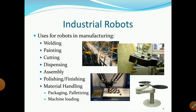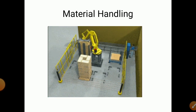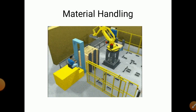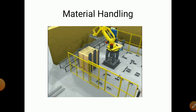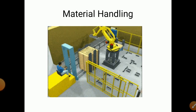Industrial robots are used in manufacturing. Robots have different arms, a controller, sensors, and actuators. They are used for welding, painting, cutting, dispensing, assembly, polishing, finishing, material handling, packaging, palletizing, and machine loading. With the help of robots, material is picked from one position and shifted to another, requiring sensors, actuators, and a controller.